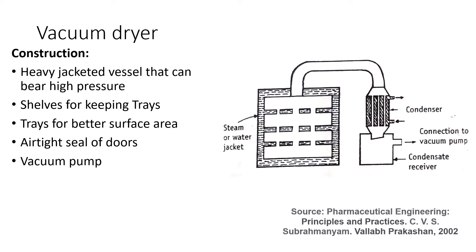Looking at the construction, there is a well-insulated, heavy jacketed vessel which can withstand high pressure. There are shelves for keeping trays inside; the trays hold the material to be dried and their better surface area offers good contact area for heat exchange. There is an airtight seal on the doors so that vacuum can be properly applied, and a vacuum pump is required to create the vacuum. The shelves can provide a surface area varying from 45 to 50 square meters.